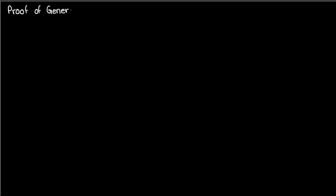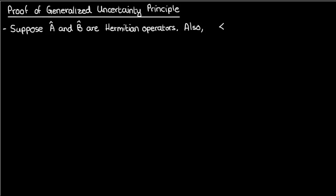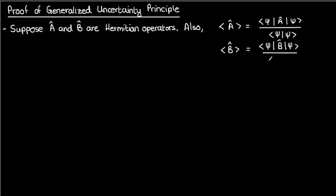Greetings students and welcome back to another lecture on quantum mechanics. In this video we're going to prove and derive the generalized uncertainty principle. We'll start by supposing that we have two Hermitian operators â and b̂, and that the expectation values of these operators with respect to some state vector ψ are given by the following expressions.